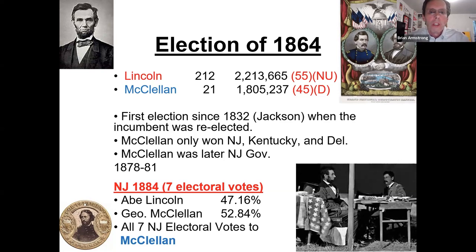McClellan had been one of Lincoln's generals who did not do well in the Civil War, but he ran as the candidate against Lincoln. He was very much a New Jersey candidate and later became governor of New Jersey from 1878 to 1881. You can see that New Jersey went soundly for McClellan in that election.